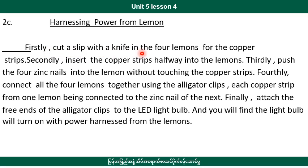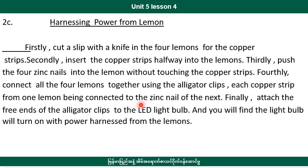Firstly, cut a slit with a knife in the four lemons for the copper strip. Secondly, insert the copper strip halfway into the lemon. Thirdly, push the four zinc pieces into the lemon without touching the copper strip. Fourthly, connect all four lemons together using the alligator clips. Each copper strip from one lemon is connected to the zinc of the next.